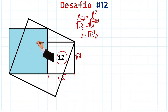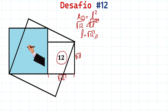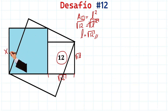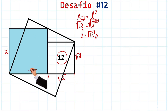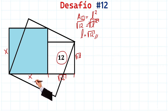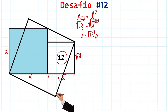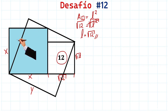Now let's label the sides of the square whose area we want to find. Let's say it's side X — so X here and X there. We're going to say the big square has side Y: Y here, Y there, and also Y here.